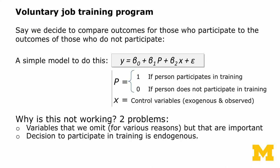Why is this approach not good? We have two problems. One is the omitted variable problem — variables we omit for various reasons, sometimes because we can't observe them, but which are actually important. The second is selection bias: the decision to participate in training is endogenous. It's not randomly assigned, so there might be characteristics that determine who participates and who doesn't.